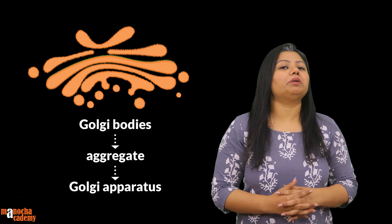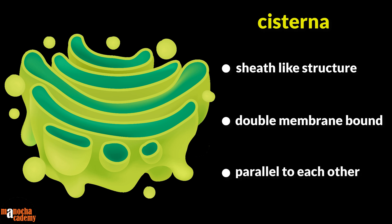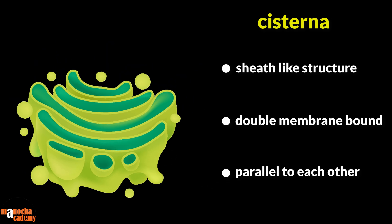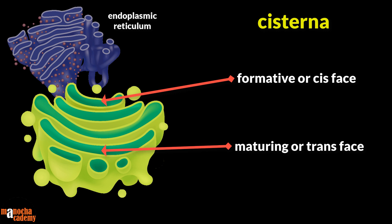The most important and most abundant part of the Golgi apparatus is the Golgi cisternae. The cisternae are sheet-like, double membrane-bound structures arranged parallel to each other. The part of the Golgi body facing the endoplasmic reticulum is known as the cis phase or the forming phase, whereas the part further away from the endoplasmic reticulum is known as the trans phase or the maturing phase.